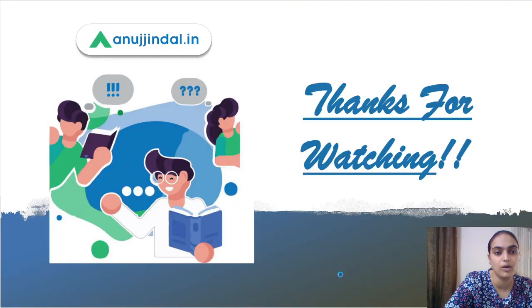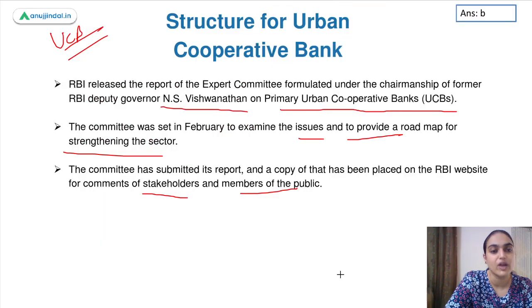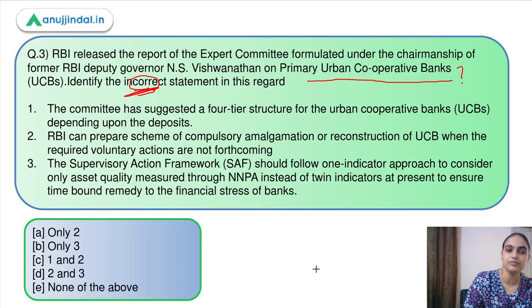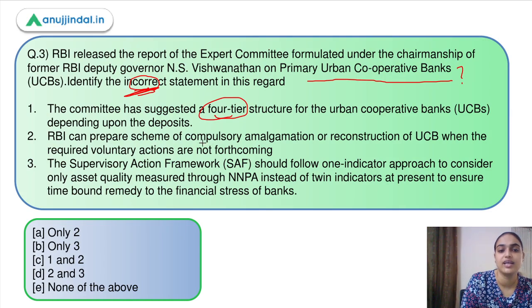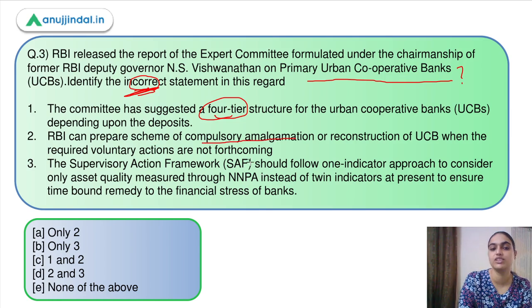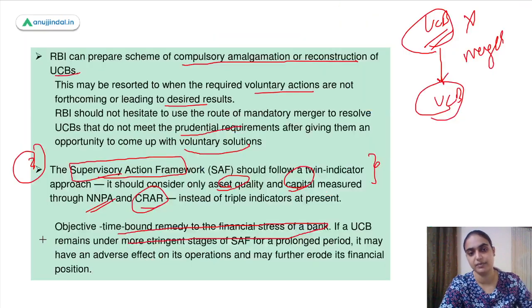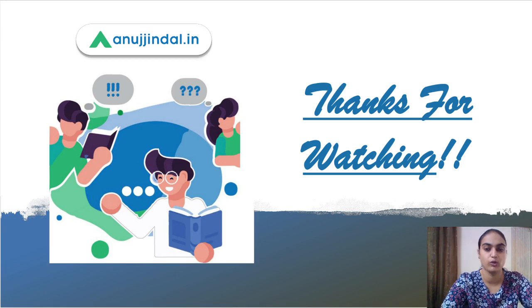Coming back to the question — we had to identify the incorrect statement. The first statement is correct: a 4-tier structure has been suggested. The second is also correct: RBI can go for compulsory amalgamation. However, the third statement is incorrect because it says the SAF focuses on a one-indicator approach, whereas now it focuses on a twin indicator approach instead of the earlier three indicators. So the answer is option B — the third statement is incorrect. This was all for today's session. I hope it was useful. Thank you so much.